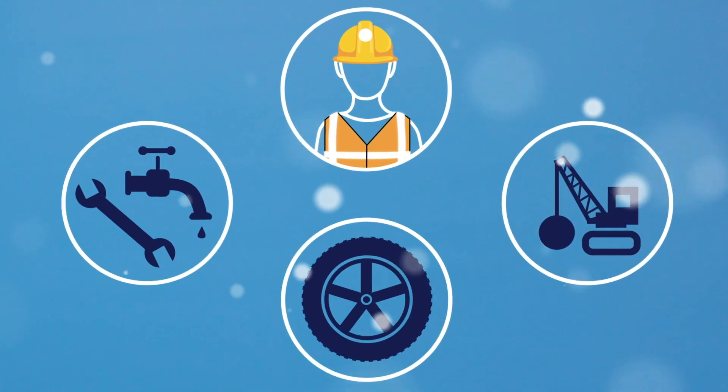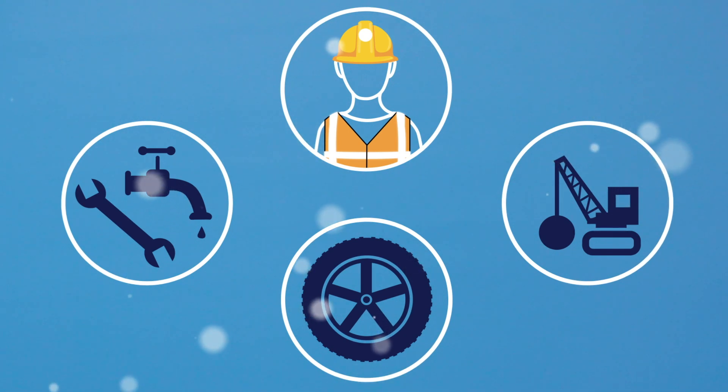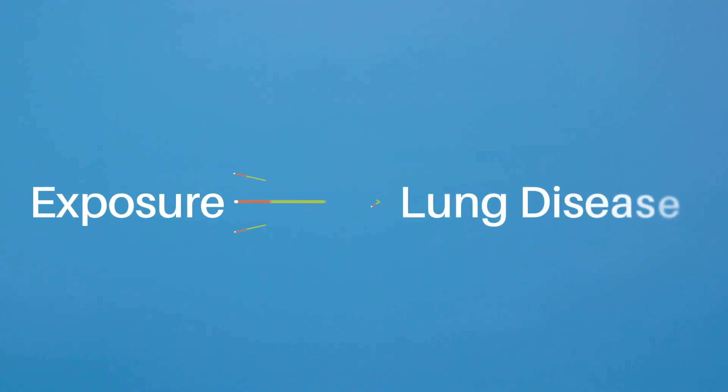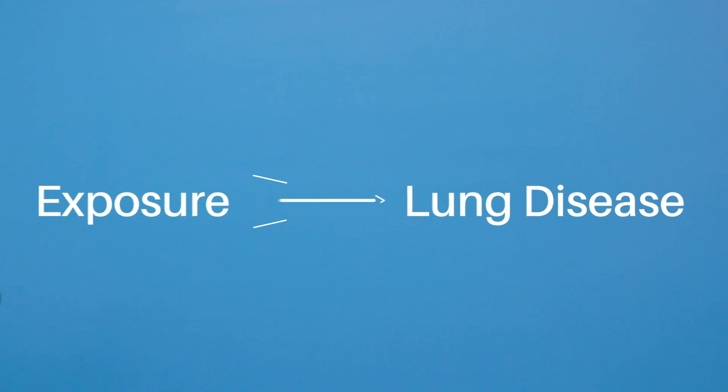The more exposure a person has had, the higher the risk, and there is usually a lag time of several years between the exposure and the development of lung disease. Exposure to enclosed asbestos — such as what is behind a wall in a building where you work or live, or asbestos in the soil — does not cause disease.